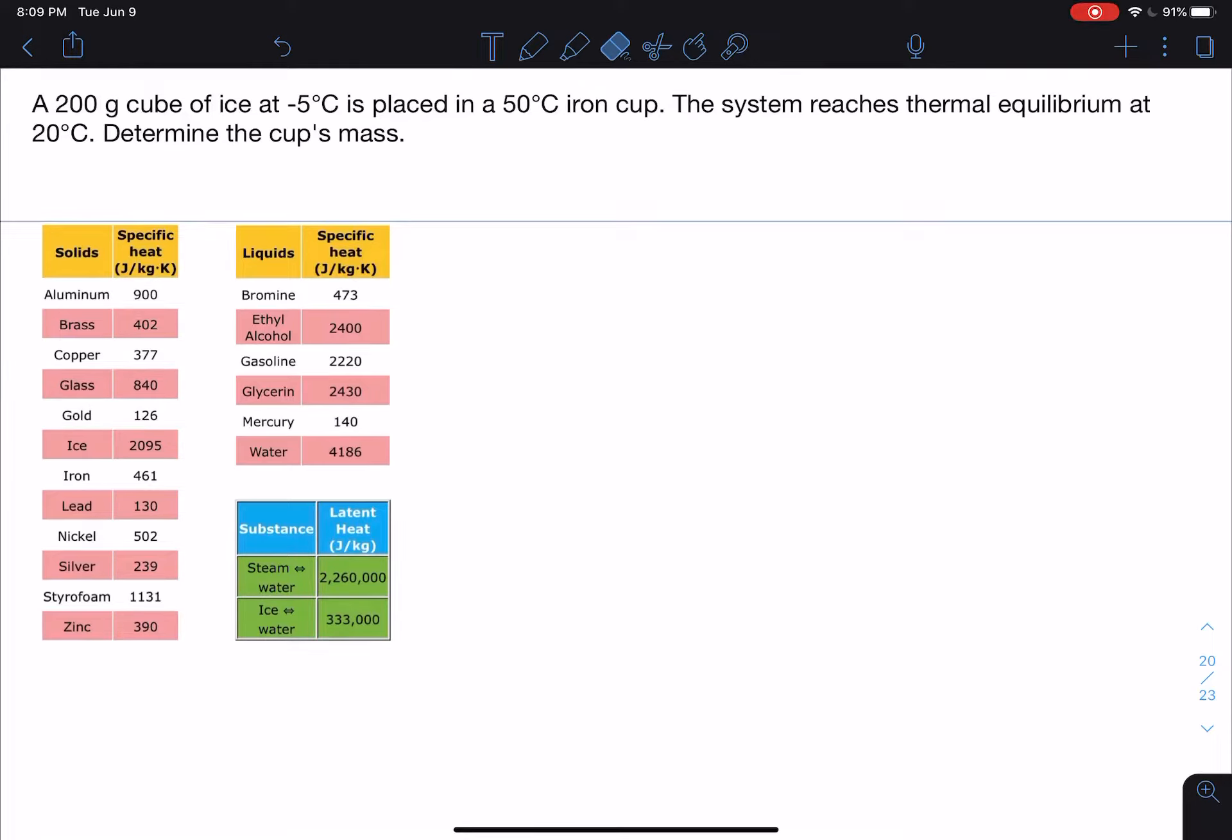Here's a problem that involves phase change. We have a 200 gram cube of ice at negative 5 degrees Celsius, and it's placed in a 50 degrees Celsius iron cup. The system reaches thermal equilibrium at 20 degrees Celsius. Determine the cup's mass.